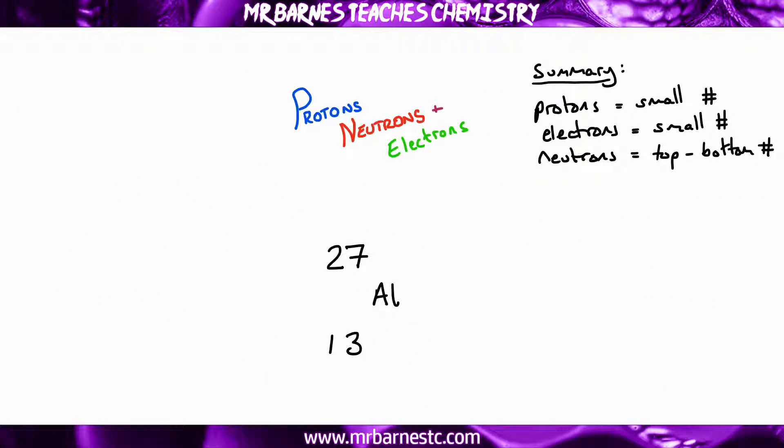So if we have a look at another example, we're going to have a look at aluminium. Remember, the protons and electrons are the small number, and the neutrons is top, take away, bottom.